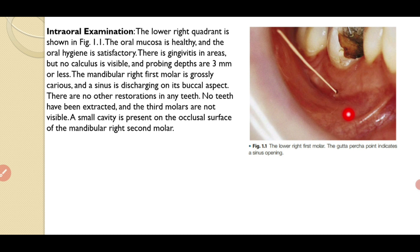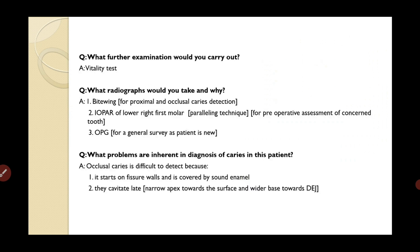On intraoral examination, the lower right quadrant is shown in figure 1.1. The oral mucosa is healthy, oral hygiene is satisfactory, and there is gingivitis in areas but no calculus. Probing depths are three millimeters or less — no pockets. The mandibular right first molar is grossly carious with a sinus discharging on its buccal aspect. No teeth have been extracted, third molars are not visible, and a small cavity is present on the occlusal surface of the second molar.